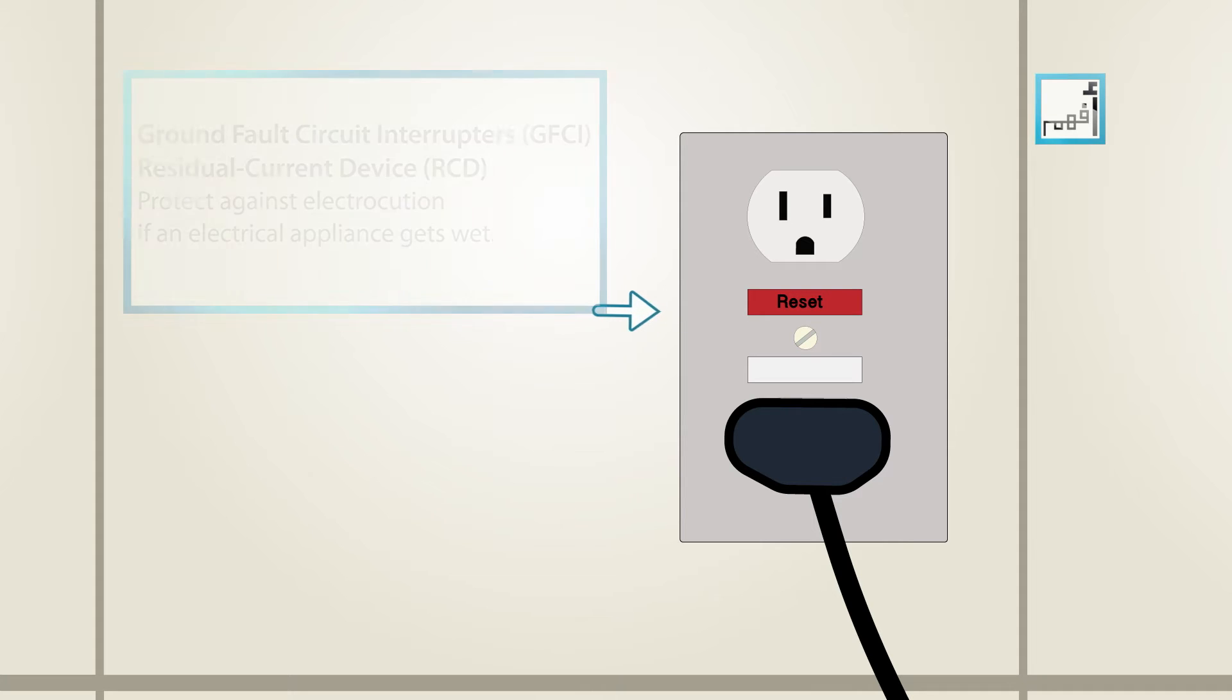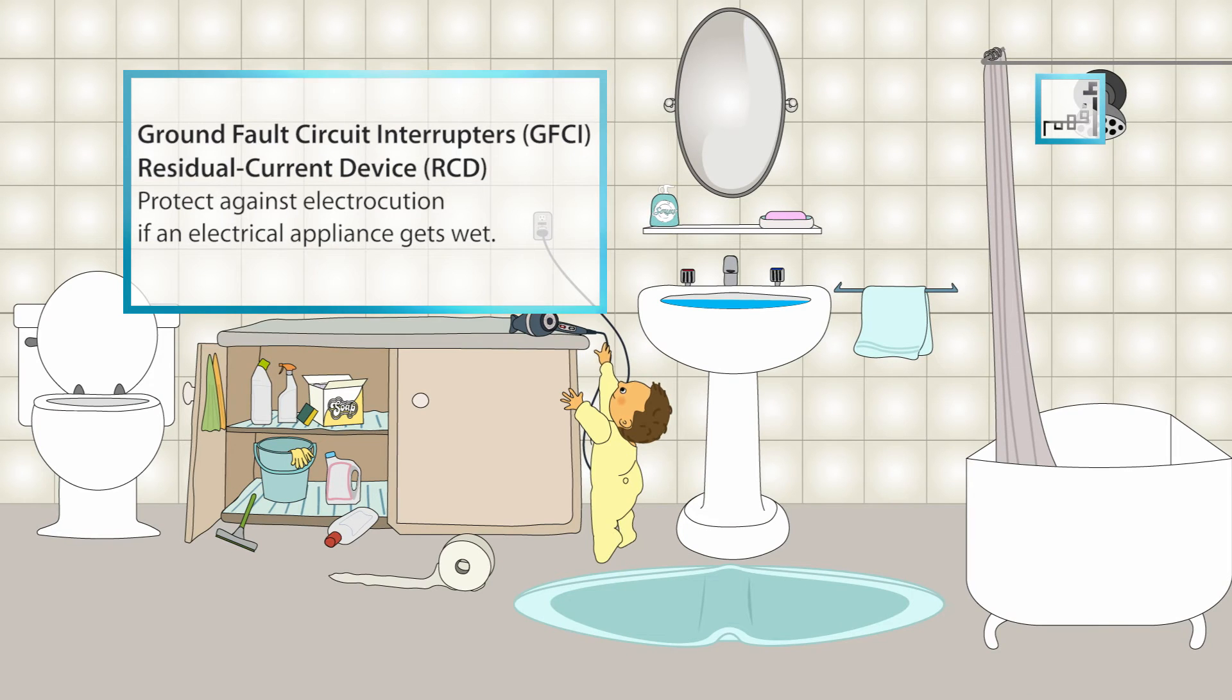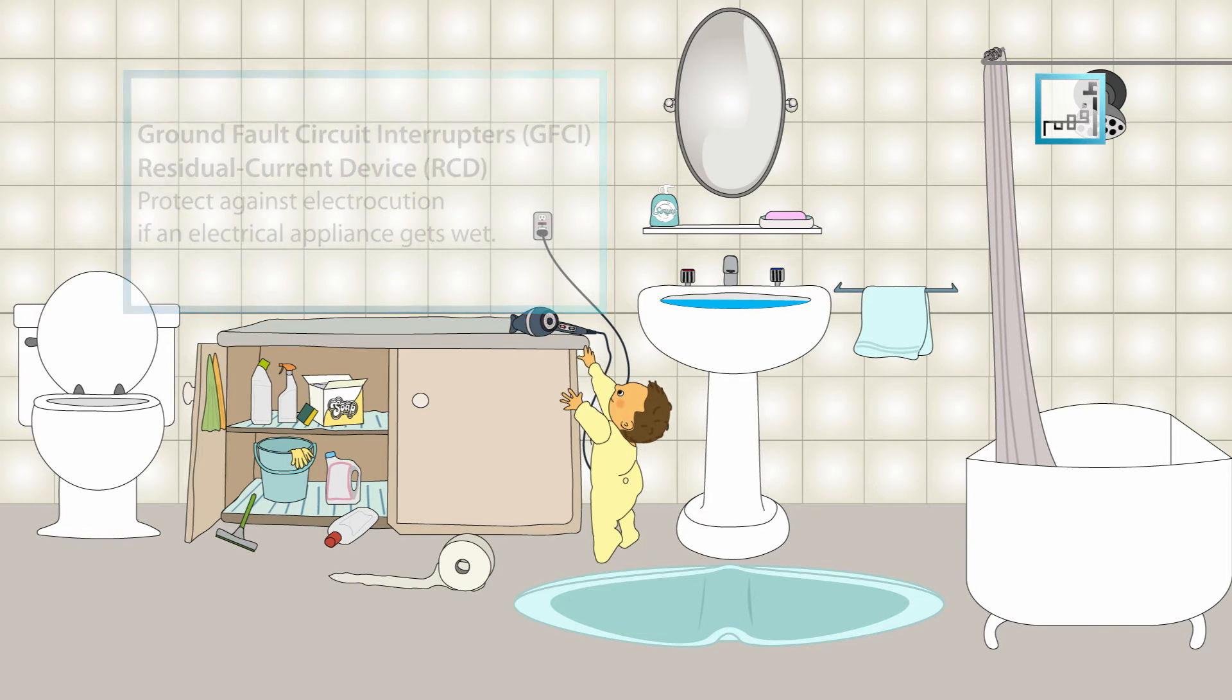Make sure that the outlets have ground-fault circuit interrupters, which protect against electrocution if an electrical appliance gets wet.